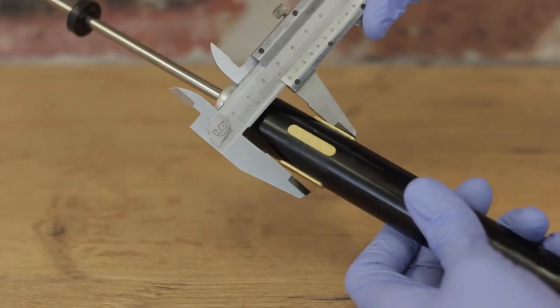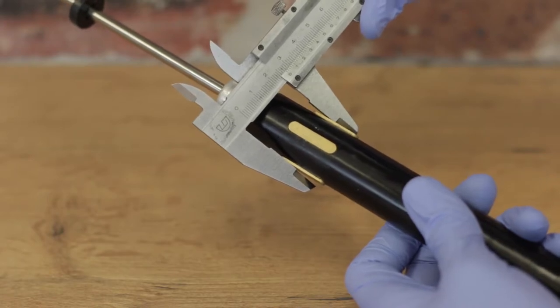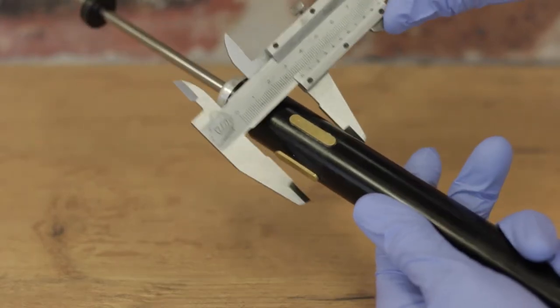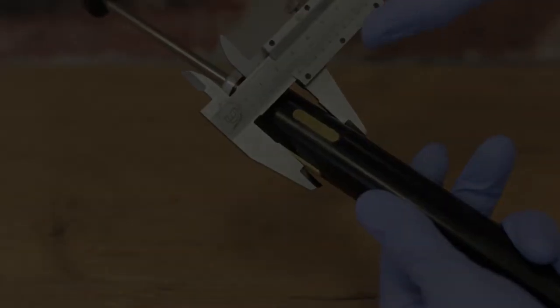Use your vernier caliper to measure the distance between the brass keys. Compare your dimensions to this table to make sure that they've been inserted correctly.